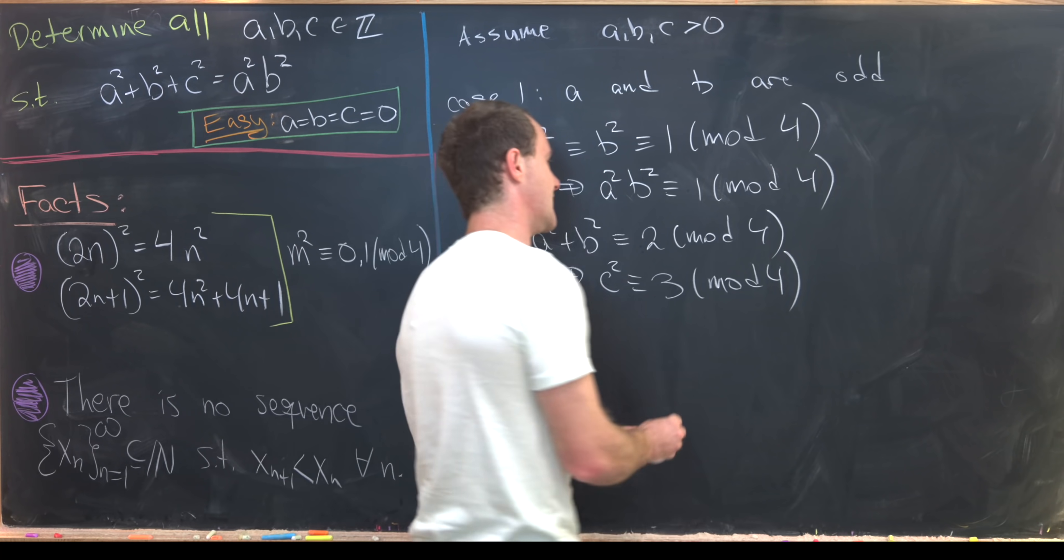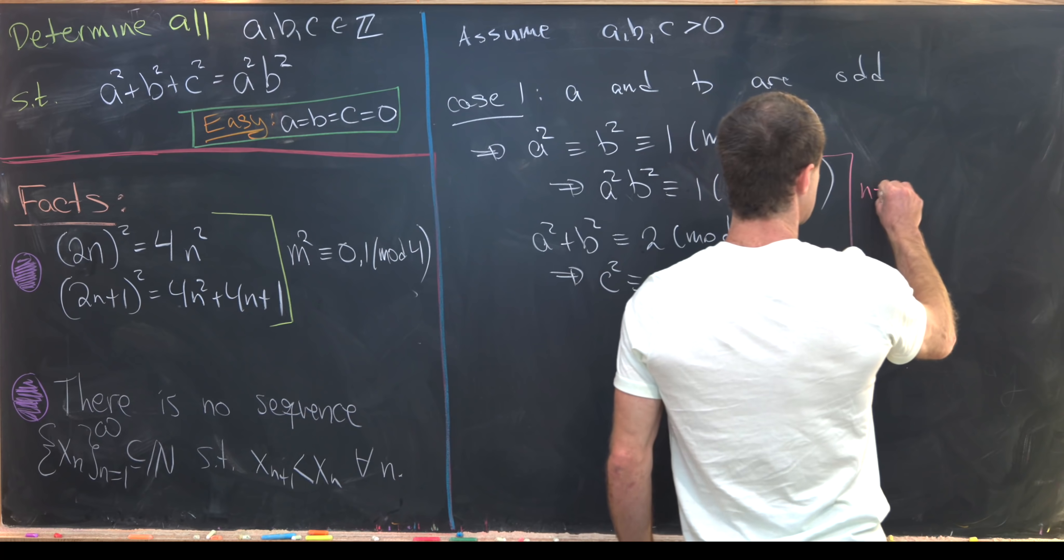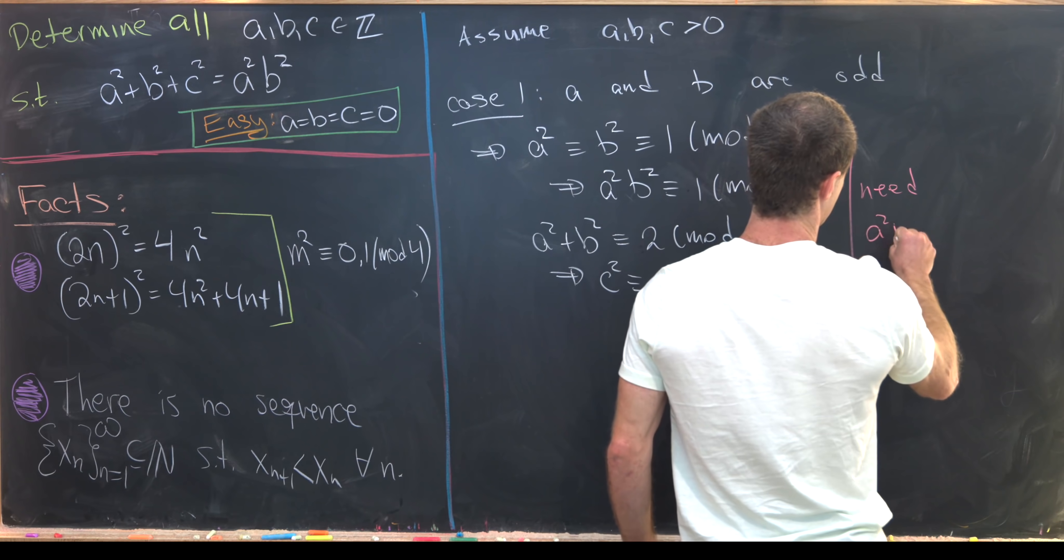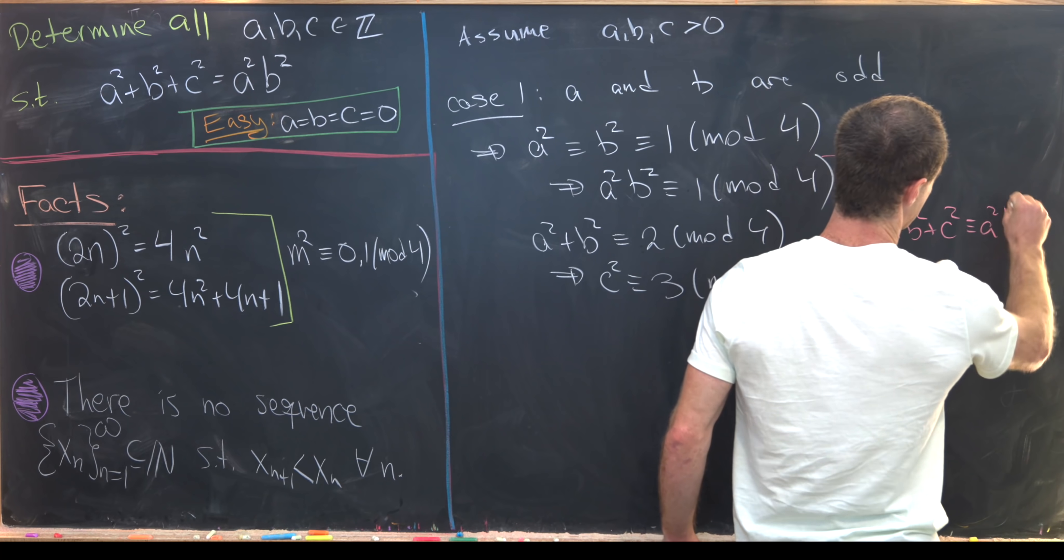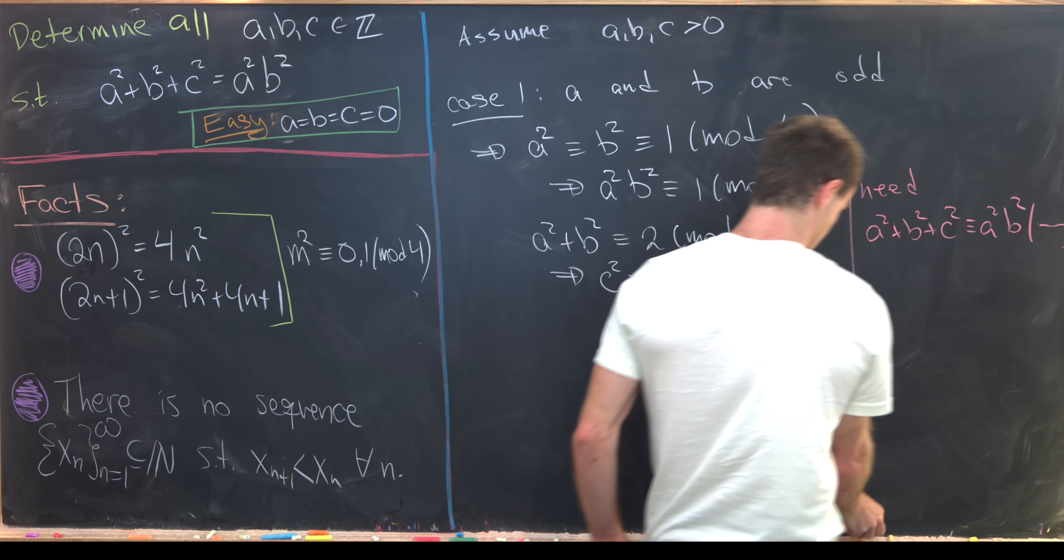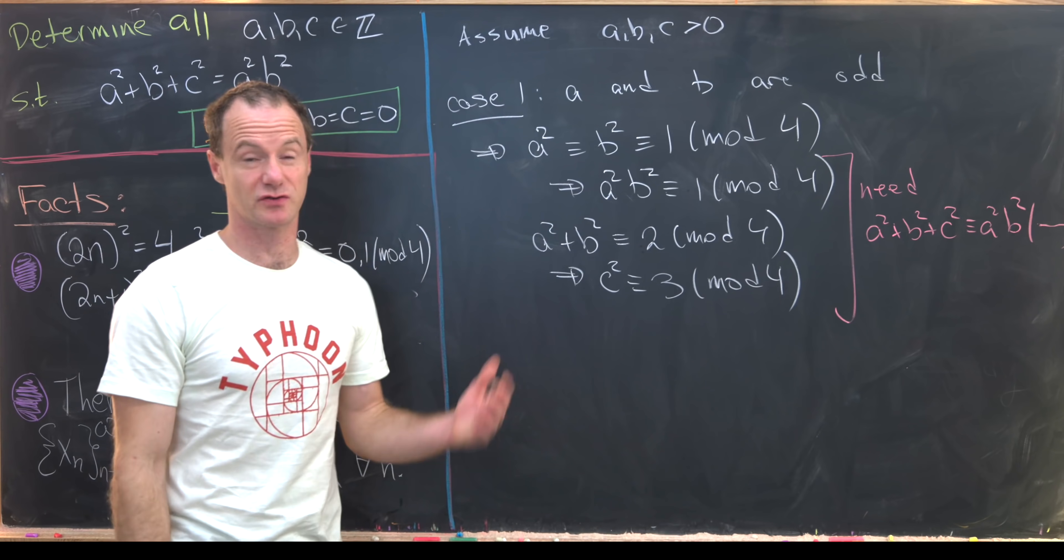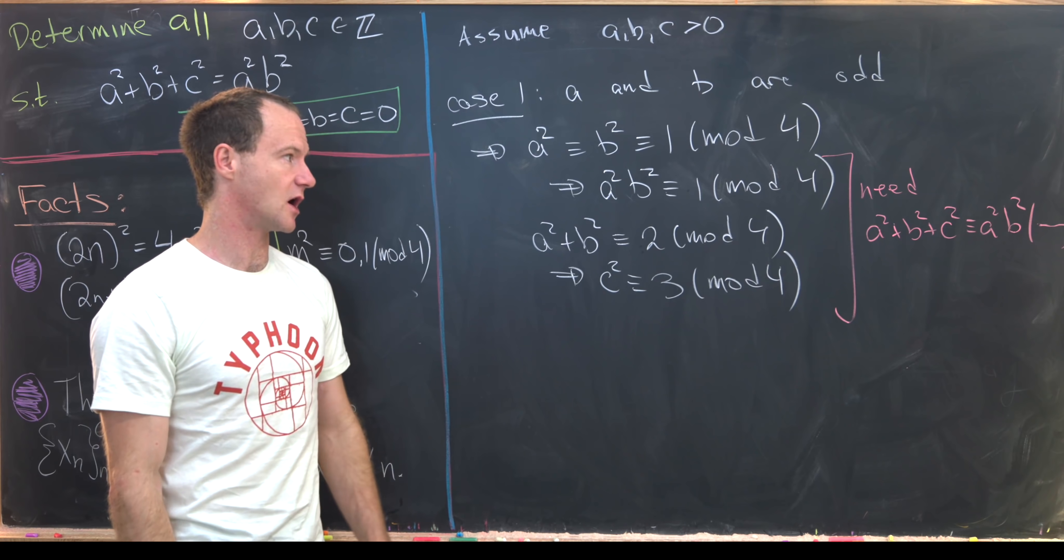So why is that? That's because we need a² + b² + c² to be congruent to a²b² mod 4. Well, we need them to be just straight up equal, but if they're equal they're congruent mod 4.